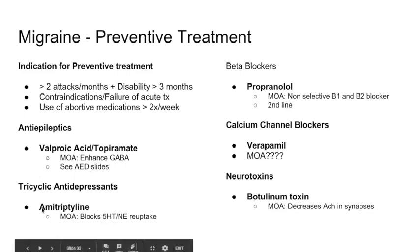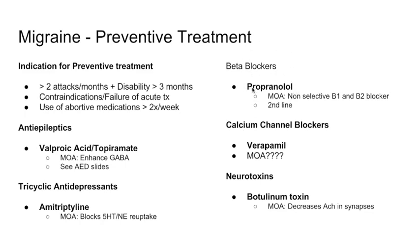Tricyclic antidepressants — specifically amitriptyline — are used in preventative treatment. They block serotonin and norepinephrine reuptake. Beta blockers can be used, specifically propranolol, which is the most commonly used and the one with the most data. It is a non-selective beta-1 and beta-2 blocker.